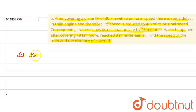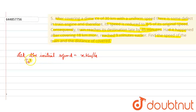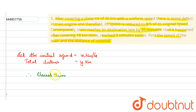So first of all, let the initial speed equal x kilometers per hour, and let the total distance to be covered equal y kilometers. Now the usual time taken will be y upon x hours, since we know time equals distance upon speed.